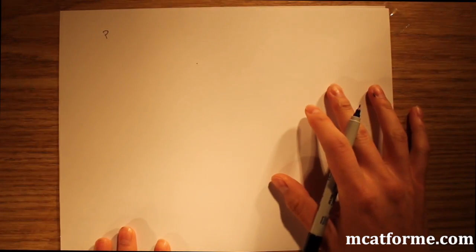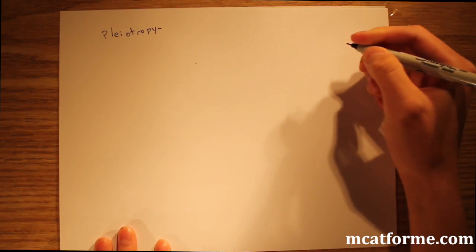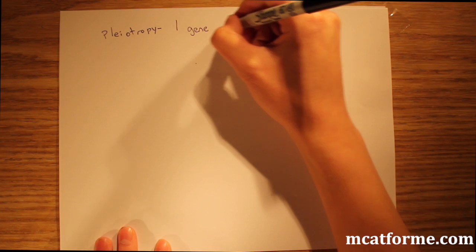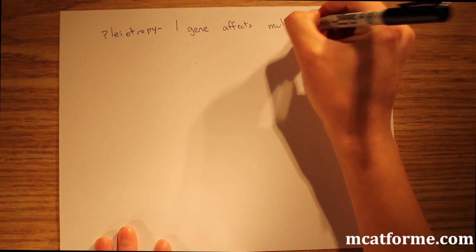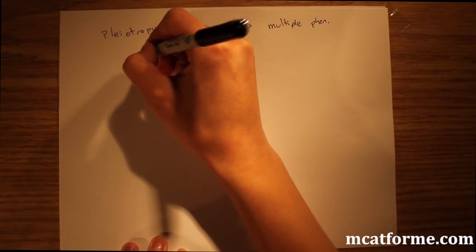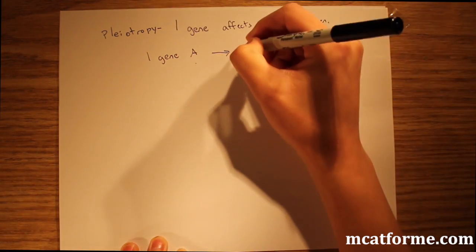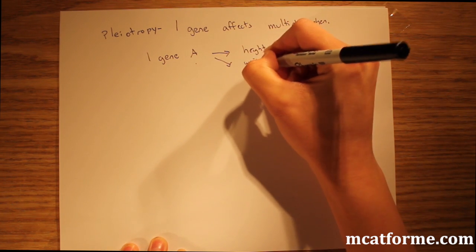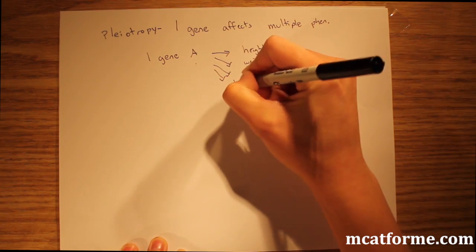The next one we're going to be looking at is pleiotropy. Pleiotropy is when one gene affects multiple phenotypes. I don't have a specific example for this, but an example would be one gene, maybe gene A, it's going to affect height, but it'll also affect your weight and maybe your eye color and maybe even your hair color.